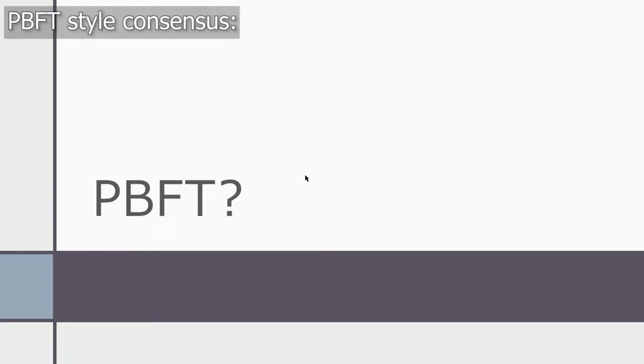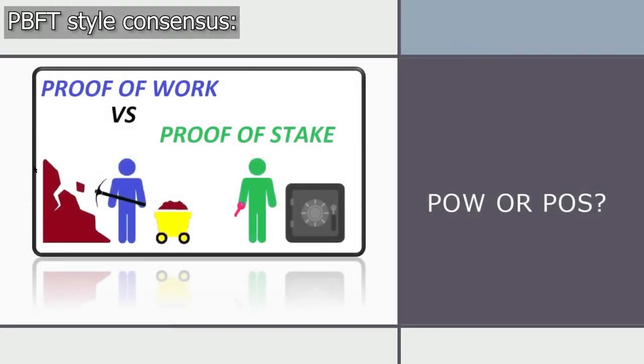Now let's talk about the BBFT-style consensus mentioned earlier. The team performed extensive research on proof-of-work and proof-of-stake, and surprisingly both failed to impress them. Their expectations for Sybil attack resistance and the measure of decentralization were not met by either approach.